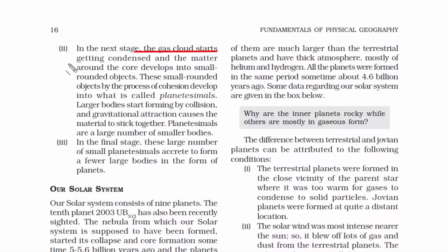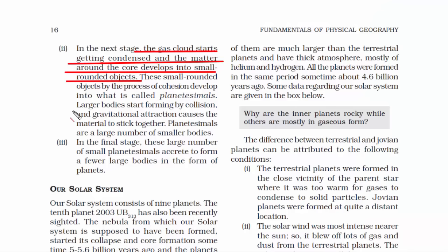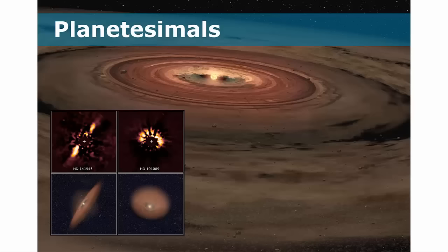In the next stage, the gas cloud starts getting condensed, meaning it becomes very concentrated. Due to this phenomenon, the matter around the core develops into small rounded objects. Then, after time, these small objects by the process of cohesion form groups and develop into what is called planetesimals.